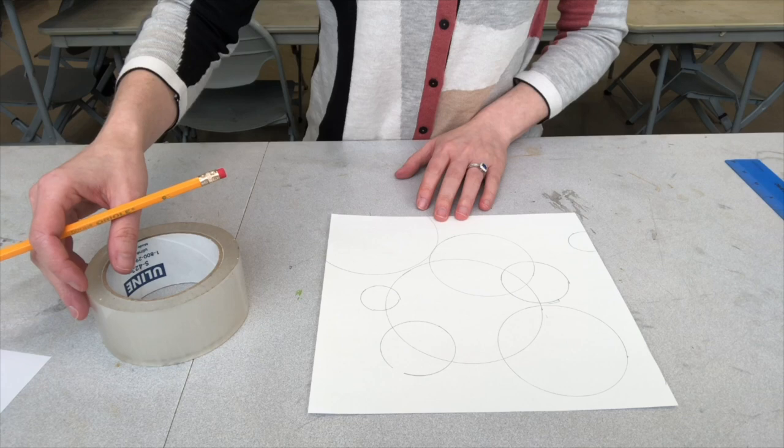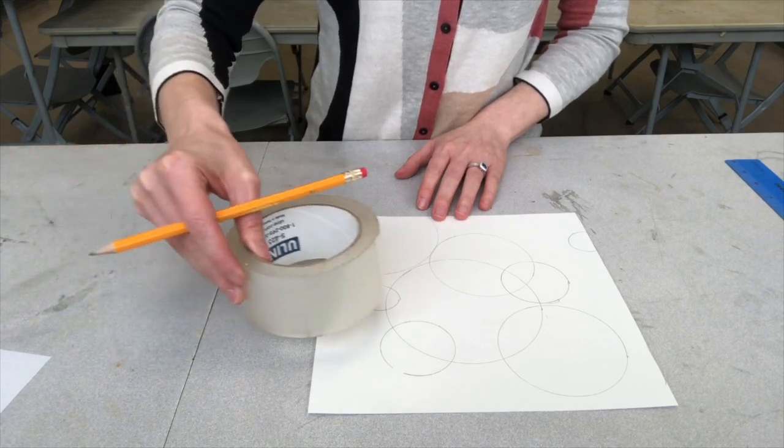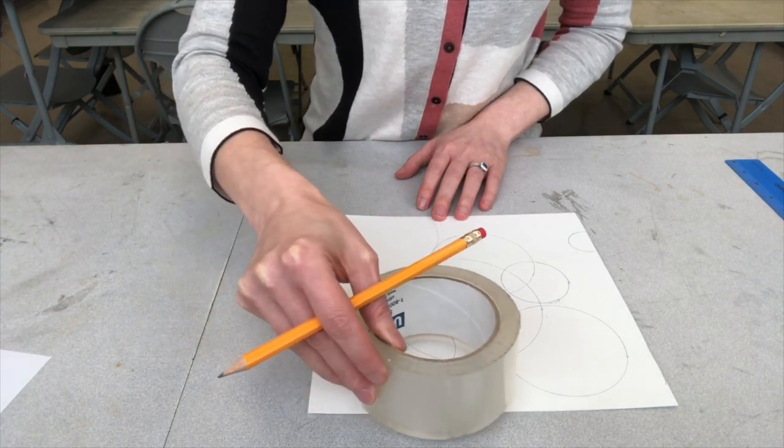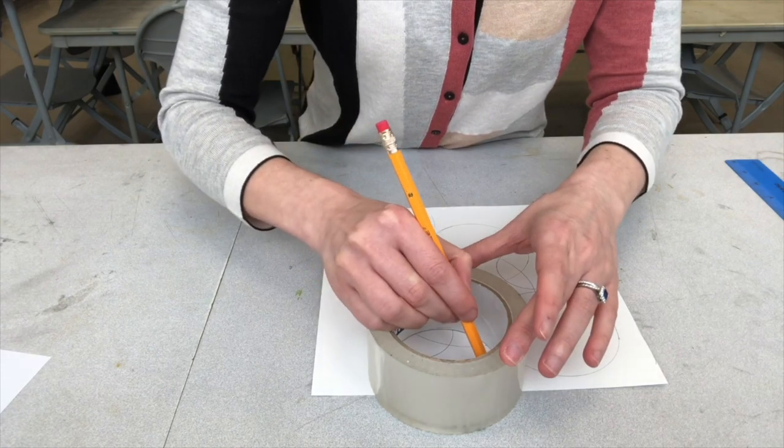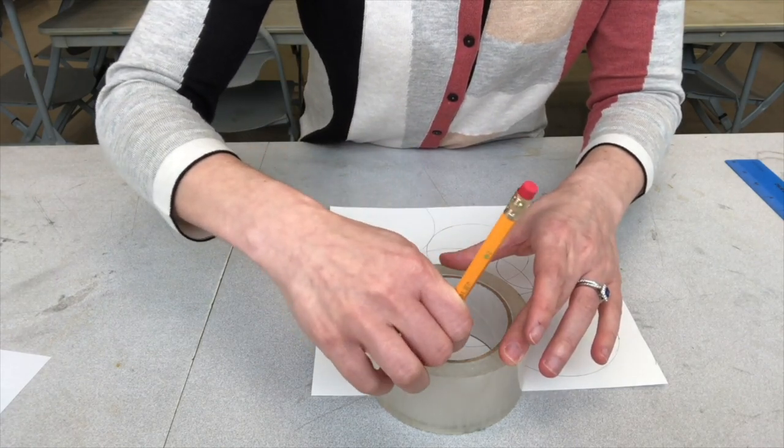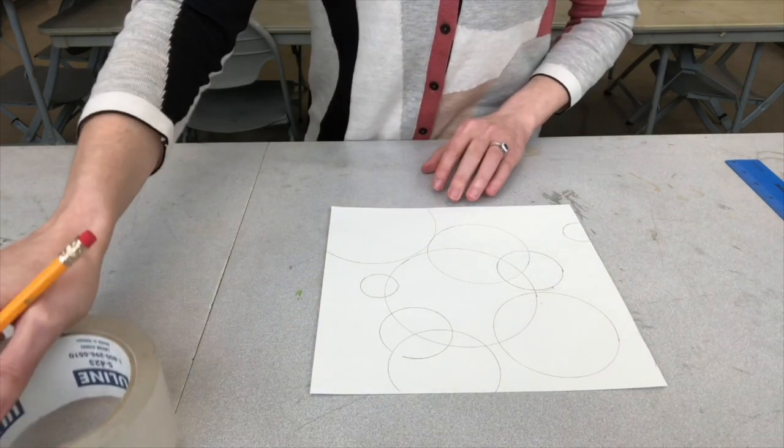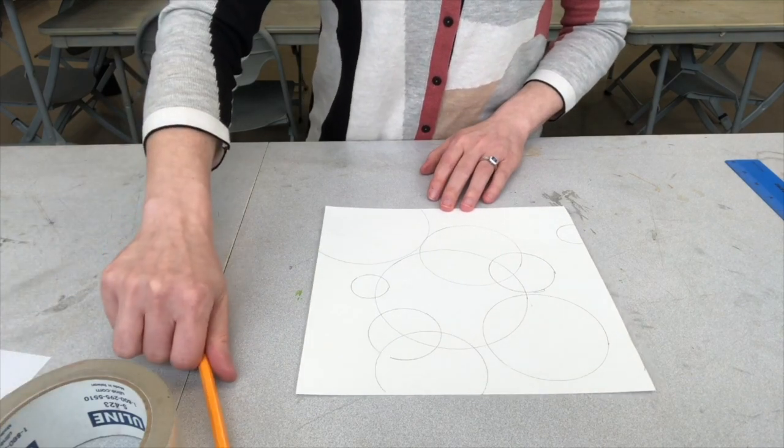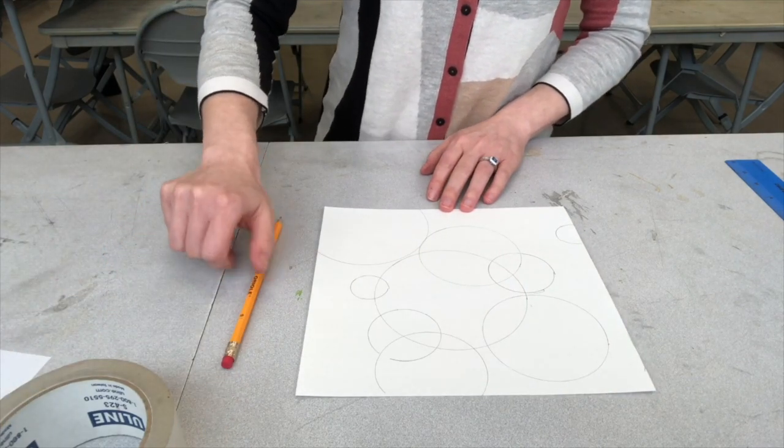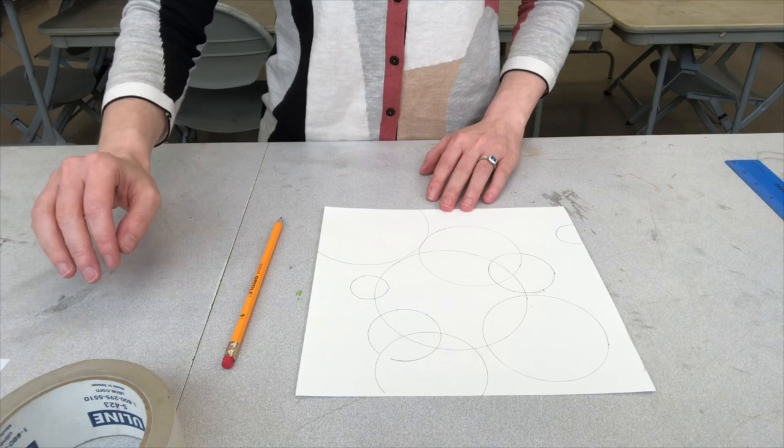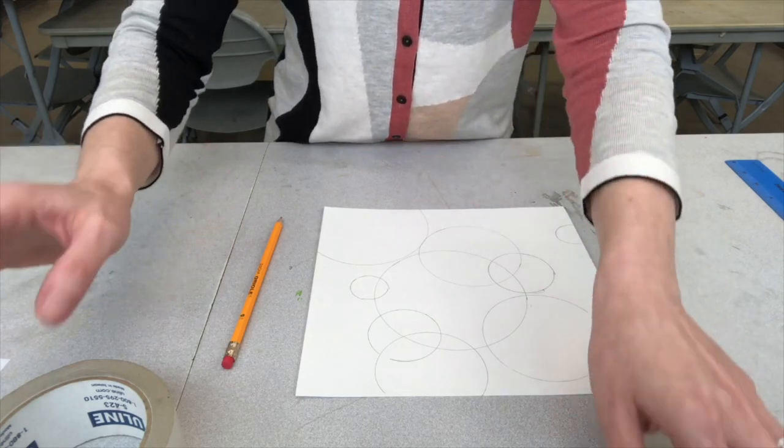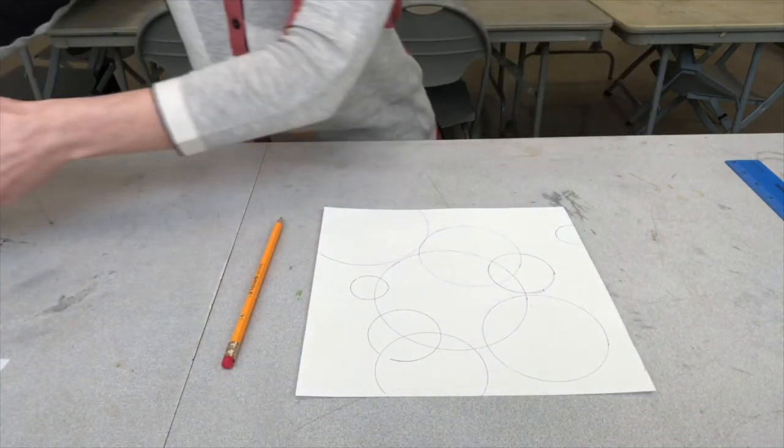Okay, and I'm going to do one more. I'm going to use this roll of tape. I'm going to trace the inside of the roll of tape. So you can cover your paper with as many circles as you want. It all depends on how long you want to spend on your project. Okay, so now I'm going to take my circle items and move them out of the way.